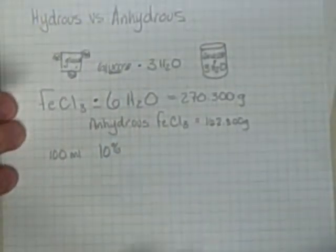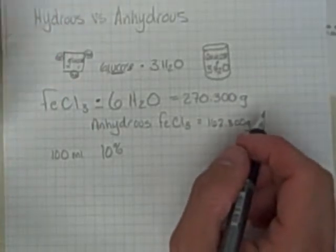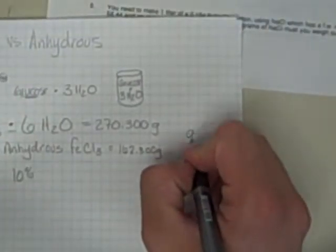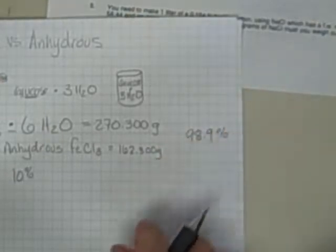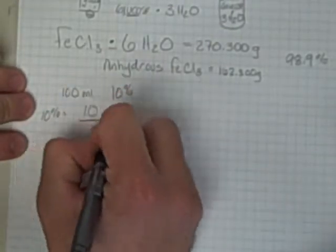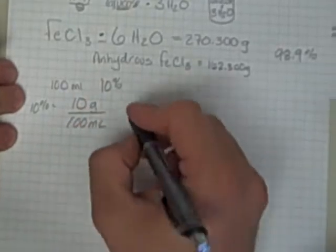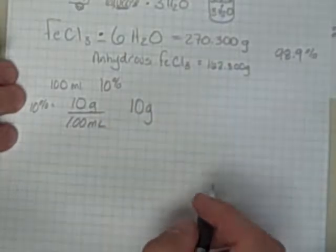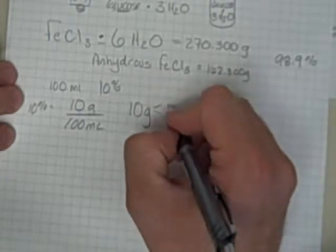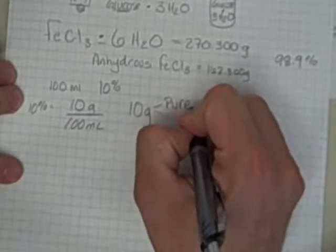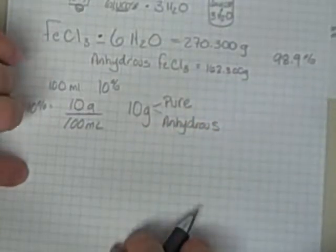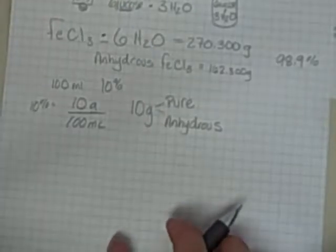The way Gary's got this set up, it's not necessarily a hard problem, but now we've got to take into account this anhydrous-hydrous thing. In this problem number three, he actually threw in a percent purity as well. He said this guy's only 98.9% pure. So let's do it. I know that 10% is telling me I would have 10 grams in every 100 milliliters, so it works out kind of nice. I know I need 10 grams of ferric chloride. Now I like to stop and say, okay, 10 grams of what? Ferric chloride, but this is pure ferric chloride and also ferric chloride without any water attached. So this would be 10 grams of the pure anhydrous ferric chloride that we need.